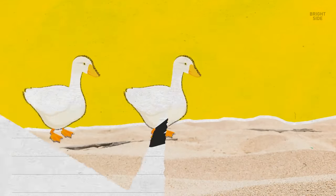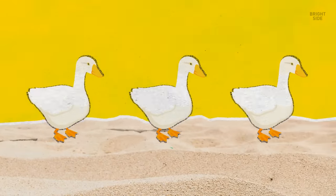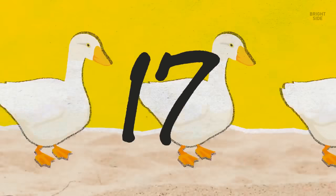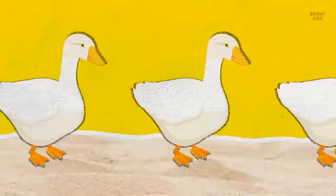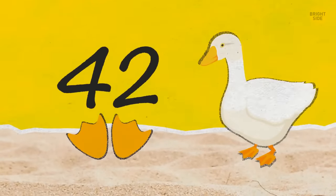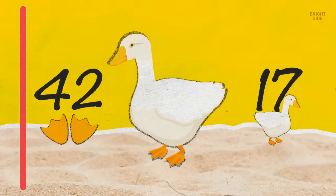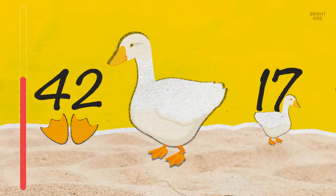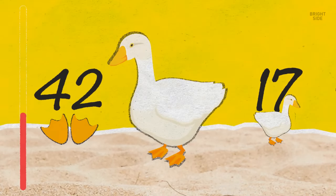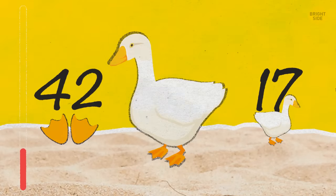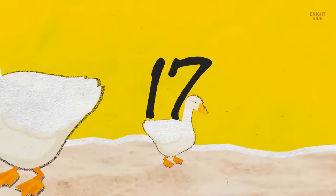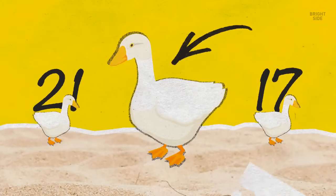The geese were going to the watering hole in a single file, one after another. One goose looked ahead and saw that there were 17 birds in front of it. It looked back. 42 paws were following him. How many geese were there? Answer, 39. 17 in front, 21 behind, and the goose who counted.